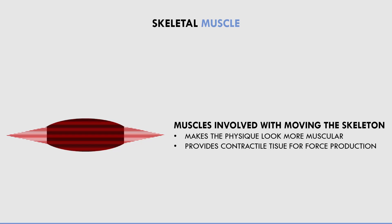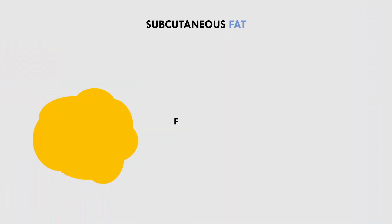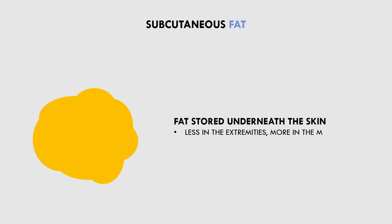The other important variable regarding body composition is subcutaneous fat. This refers to fat that is stored underneath the skin and above the skeletal muscle. Subcutaneous fat is found all around the body and preferentially stored in different locations based on sex and individual variation. Generally speaking, subcutaneous fat is found less in the extremities of the limbs, like the fingers and toes, and more towards the midsection around the waist and hips.